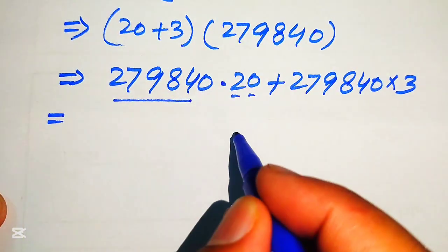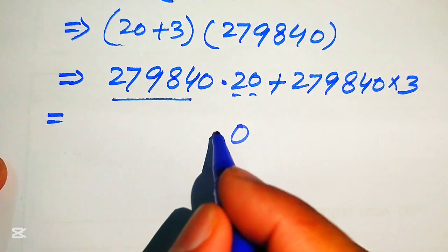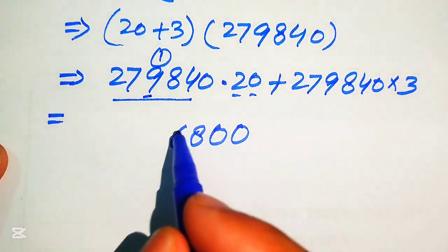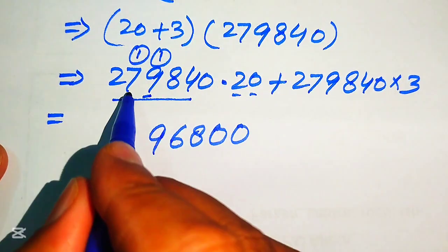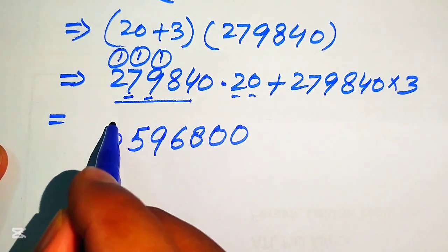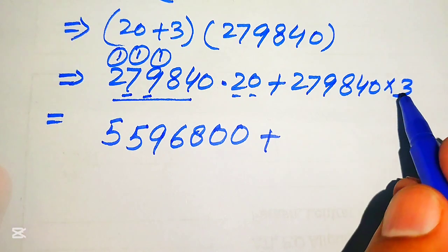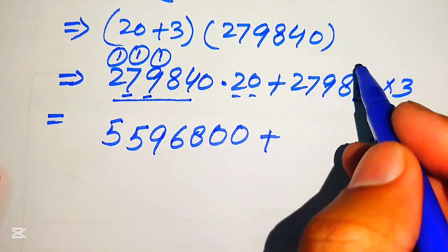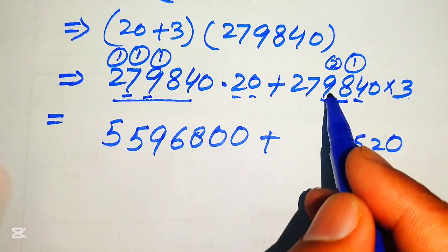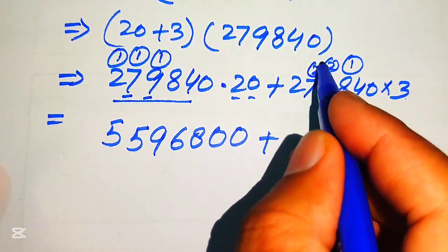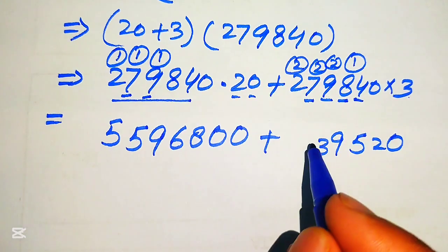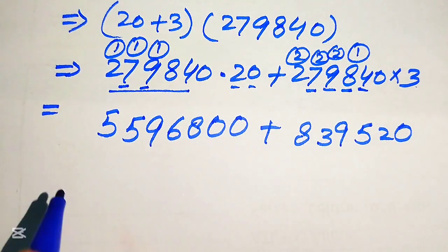For 279840 times 20: 0 times 20 is 0; 2 times 279840 — 2 zeros are 0; 2 fours are 8; 2 eights are 16, write 6 carry 1; 2 nines are 18 plus 1 is 19, write 9 carry 1; 2 sevens are 14 plus 1 is 15, write 5 carry 1; 2 twos are 4 plus 1 is 5 — giving 5596800. For 279840 times 3: 3 zeros are 0; 3 fours are 12, write 2 carry 1; 3 eights are 24 plus 1 is 25, write 5 carry 2; 3 nines are 27 plus 2 is 29, write 9 carry 2; 3 sevens are 21 plus 2 is 23, write 3 carry 2; 3 twos are 6 plus 2 is 8 — giving 839520. Now we sum up these two values for our final step.